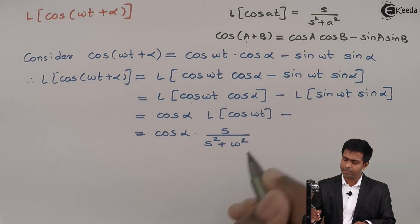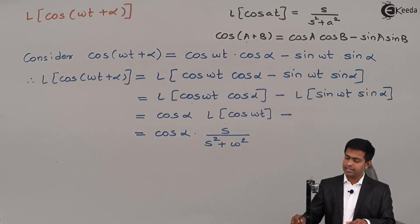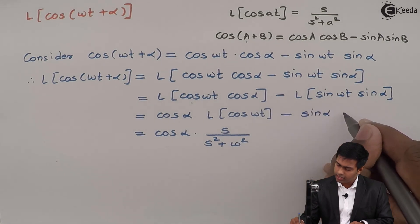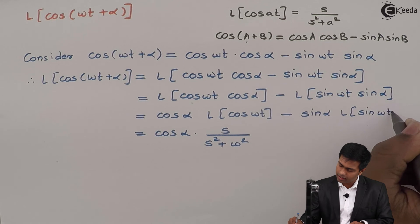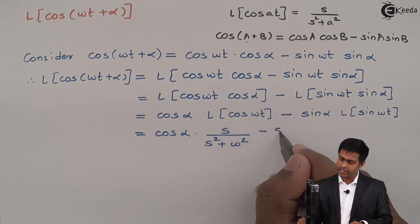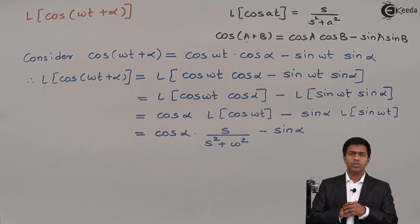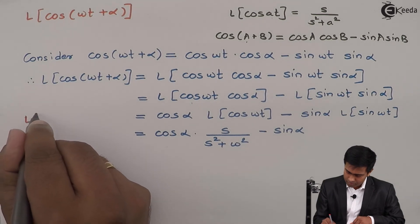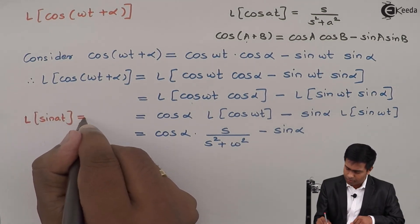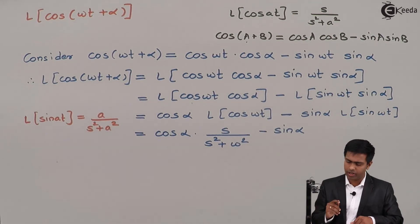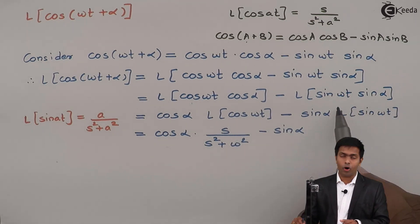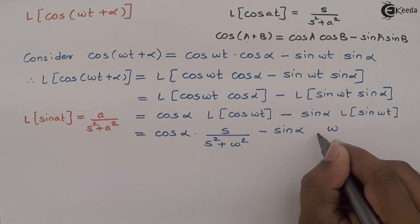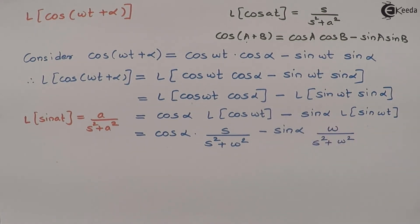Now let us solve the second term. The middle sign is negative. In the second term, sinα is also constant because it does not have t, so it can be taken outside. We get minus sinα times L{sin(ωt)}. We have a direct formula: Laplace of sin(at) = a/(s² + a²). Here a is ω, so we get ω/(s² + ω²). That is the Laplace of sin(ωt).